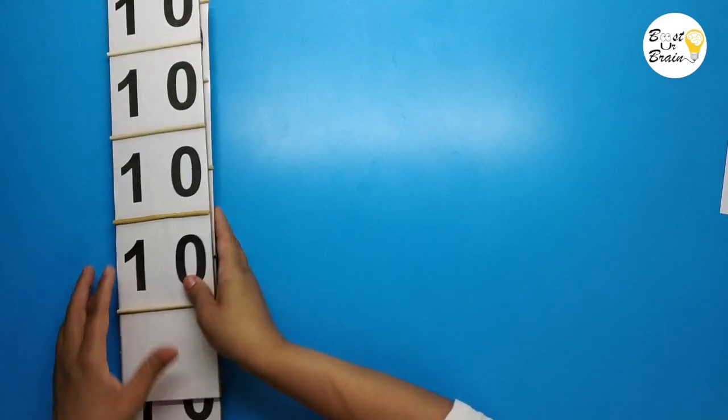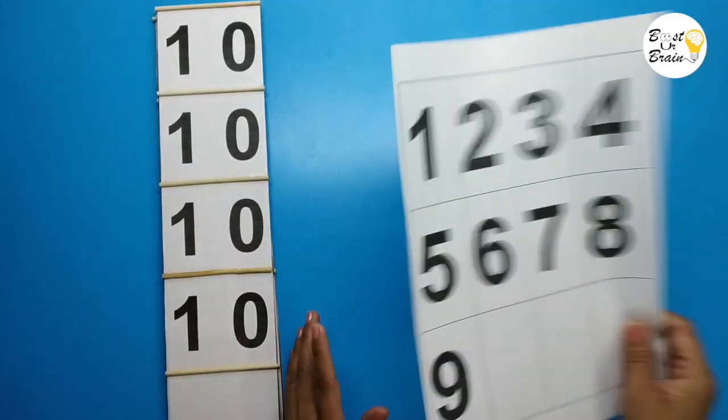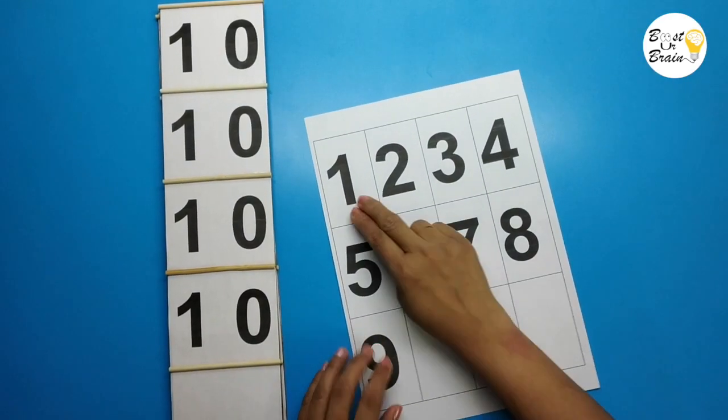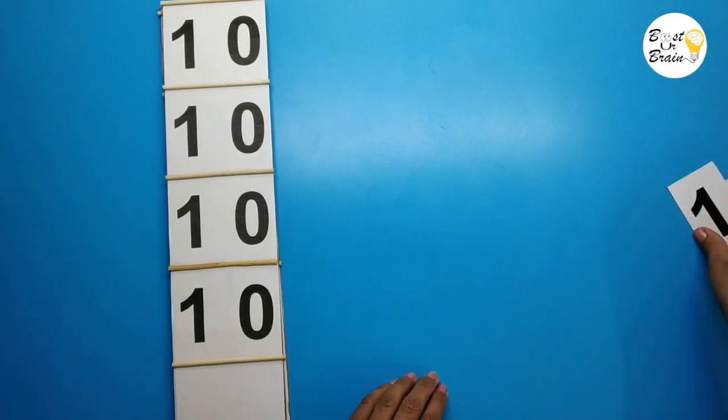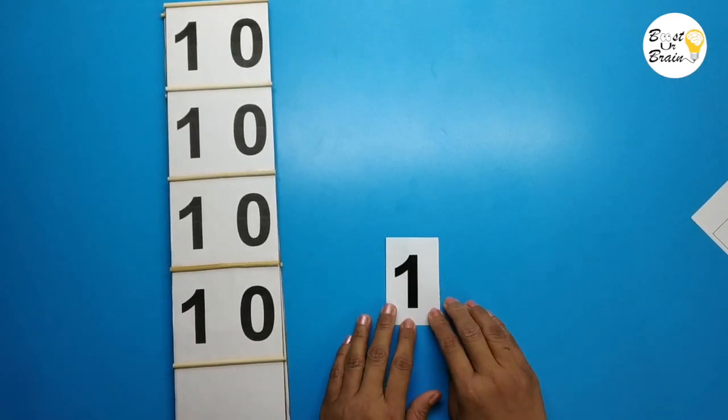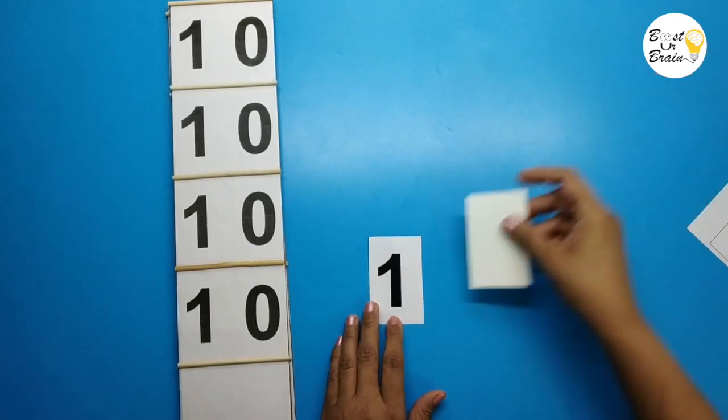Now we need to cut numbers, number 1 to 9 like this and stick it on the card.